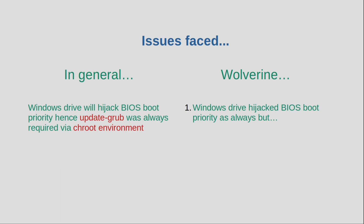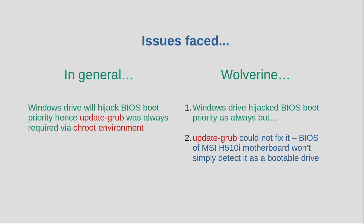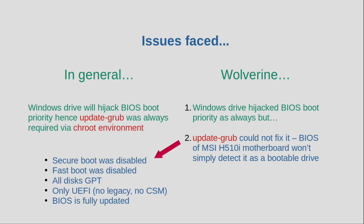But with this motherboard, first of all Windows hijacked the BIOS settings as always — it removed all references to my Linux setup and I could only see Windows as a bootable option. But this time the motherboard would simply not show the Linux drive as a bootable option at all. To make sure I was doing things right, I disabled secure boot, disabled fast boot, double-checked all my disks were GPT, and confirmed I was booting in UEFI mode with legacy or CSM disabled.